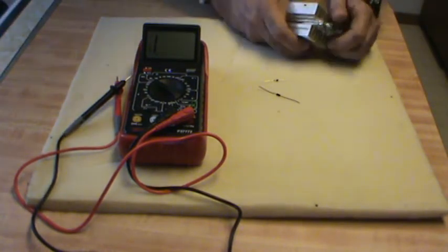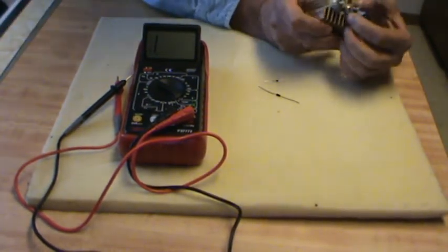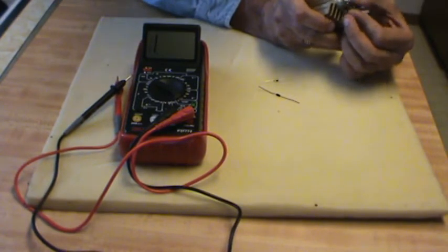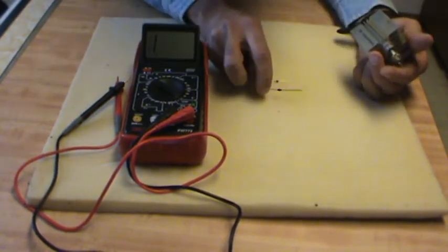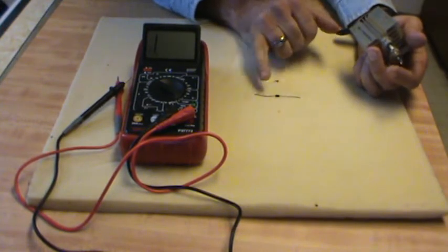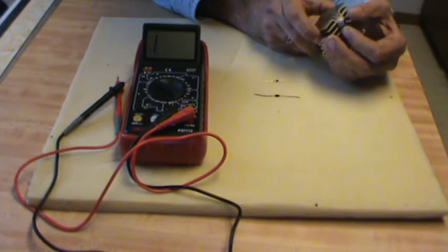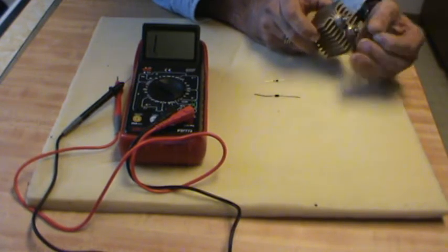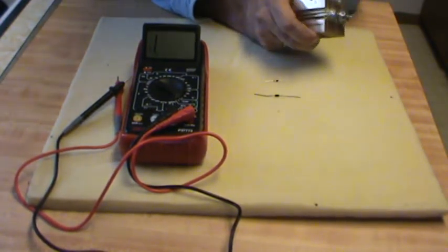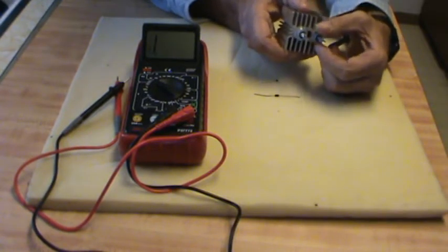Real quick, there are different ratings on diodes. There are two you're probably mostly concerned with. One is the current rating, how much current the diode can handle across it. And that's rated in amps, usually. If it's a very small diode, it's rated in milliamps. And on bigger diodes, it's rated in amps.